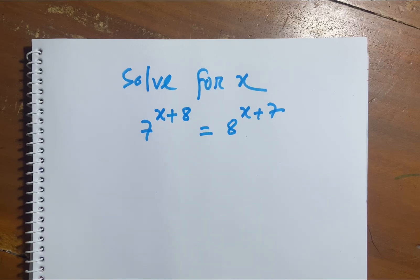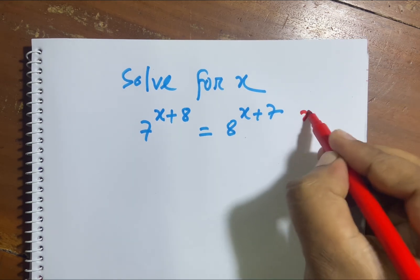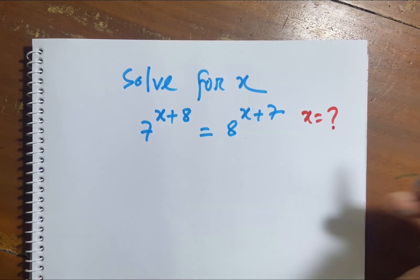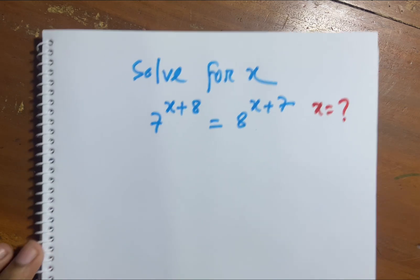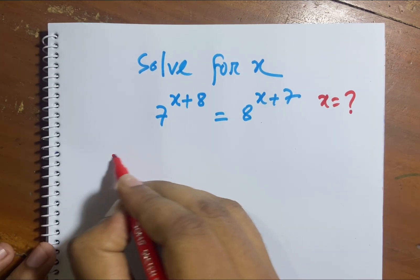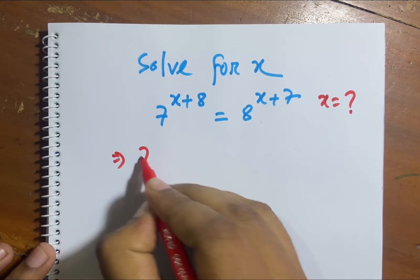Hello everyone. Today I solve this equation — it is a math olympiad equation. Solve for x: what is the value of x? The equation is 7 to the power x plus 8 equals 8 to the power x plus 7. Now I can solve this equation.